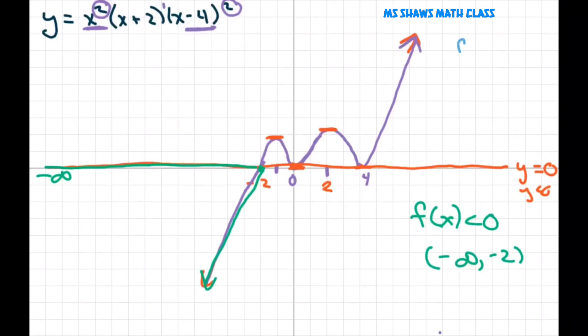Now, where is our y positive? Above the y equals 0. Y is positive. So that's going to start here, the graph above the y equals x. So that's going to be from negative 2 to 4. And that's it. Thank you. Have a nice day.